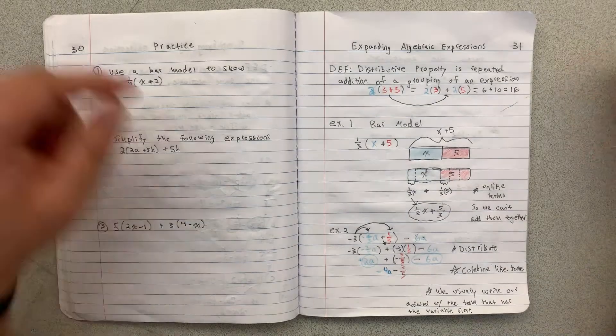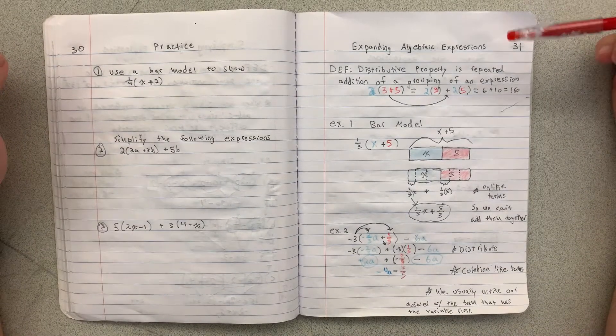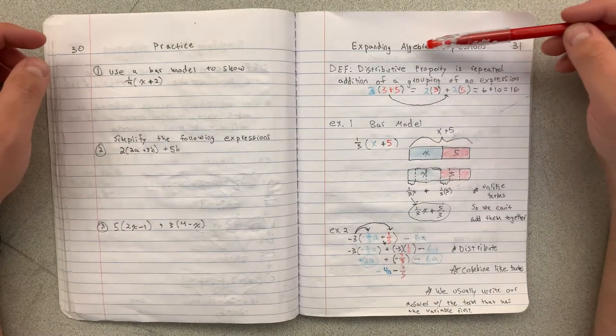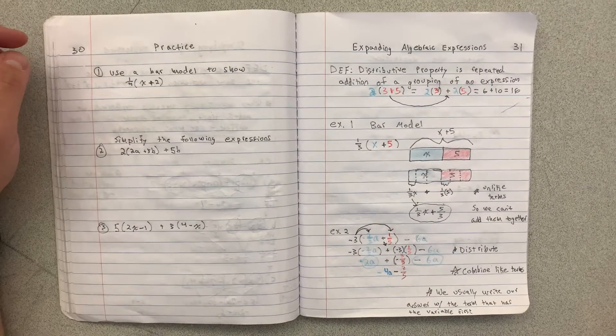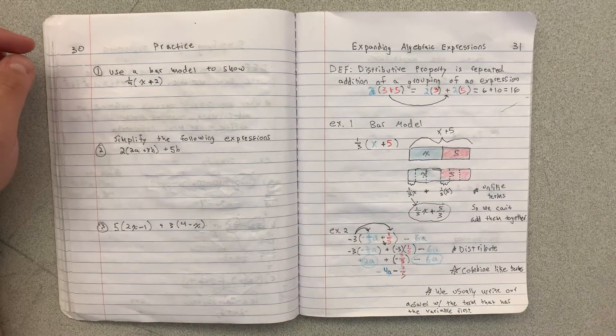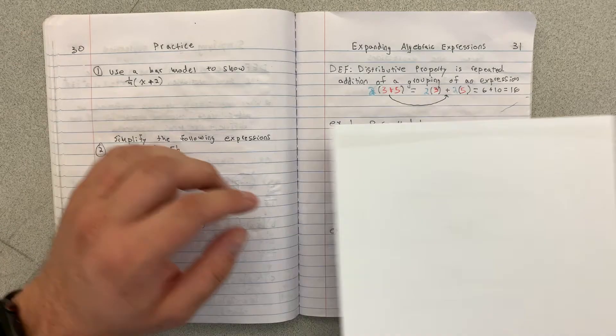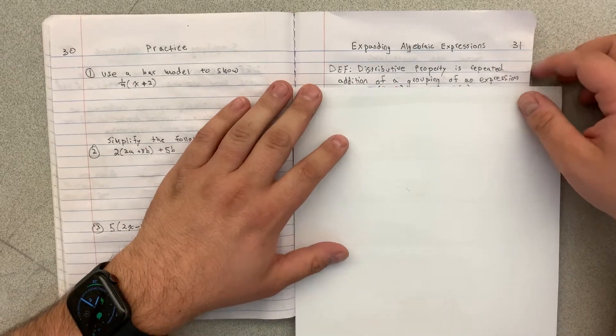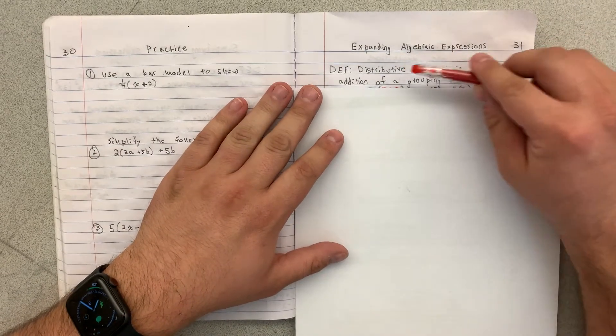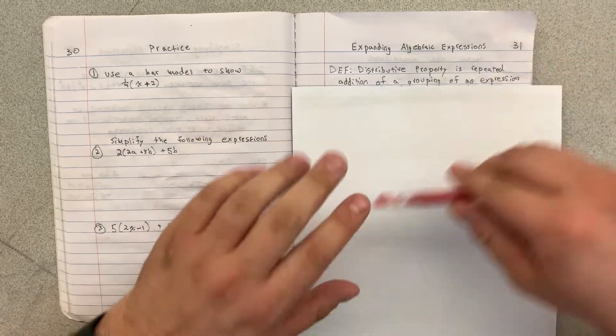Welcome back Mathematicians. We are going to go over the next topic which is expanding algebraic expressions. When we expand algebraic expressions we want to use the distributive property. The distributive property is just repeated addition of a grouping of an expression.